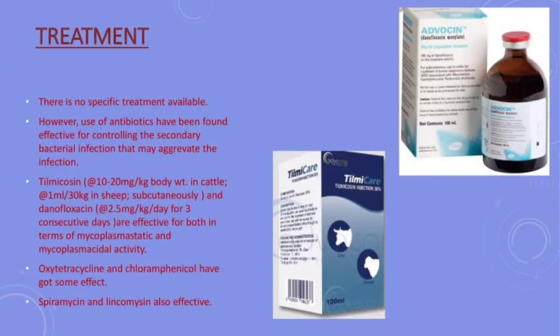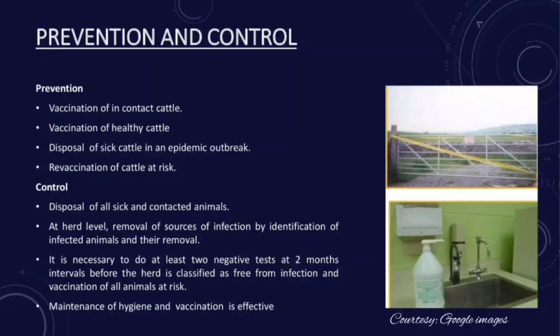Since prevention is better than cure, there are certain steps under prevention and control. Under prevention: vaccination of in-contact cattle, vaccination of healthy cattle, disposal of sick cattle in an epidemic outbreak, and re-vaccination of cattle at risk. Under control: disposal of all sick and contacted animals. At herd level, there is removal of sources of infection by identification of infected animals. It is necessary to conduct at least two negative tests at two-month intervals before the herd is classified as free from infection, and vaccination of all animals at risk.